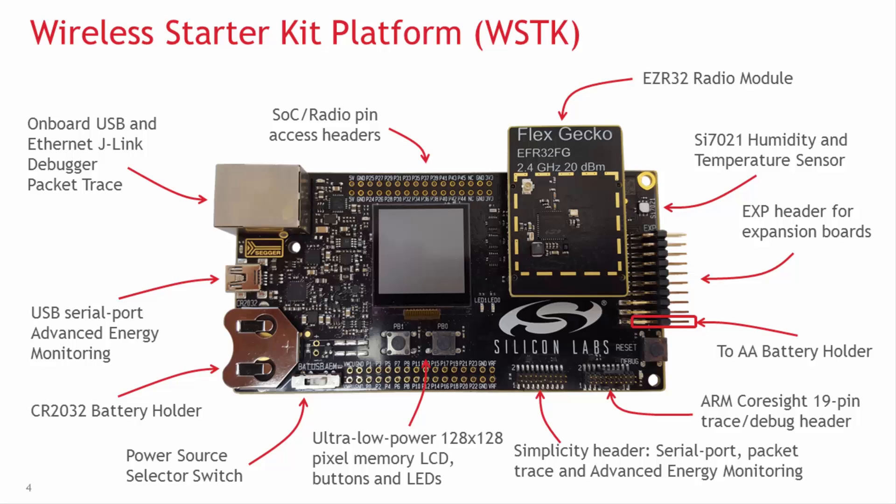The motherboard features a 128x128 pixel memory LCD, some buttons and LEDs for indication and alerts. The board has a built-in humidity and temperature sensor for sensor applications. The expansion header can be used for daughter cards or for external AA batteries to run range tests at higher output power levels. It also supports packet trace, J-Link debugger, and advanced energy monitoring for real-time current and voltage tracking.